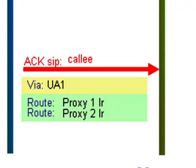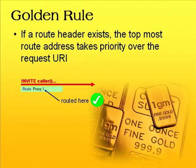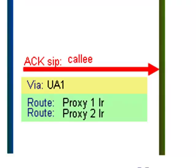Here's a really important new rule: if a Route header exists, the topmost Route address takes priority over the Request-URI. So here we have a request with a Request-URI and a Route header. Simply because the Route header exists, the message is routed to the address in that Route header — not to the address in the Request-URI. Even though the Request-URI points directly at the callee, because a Route header exists, the Request-URI is ignored for now, and the request is sent to the address in the topmost Route header — in other words, to proxy one.